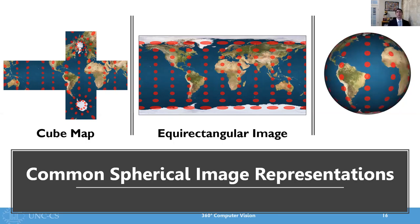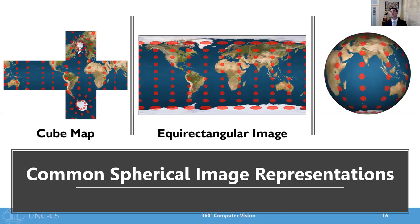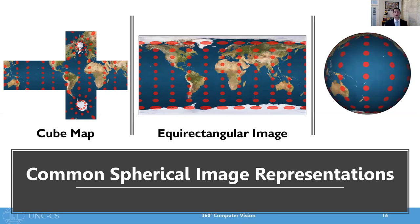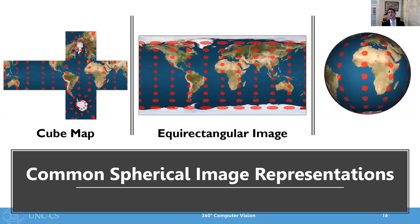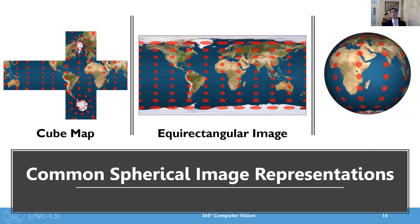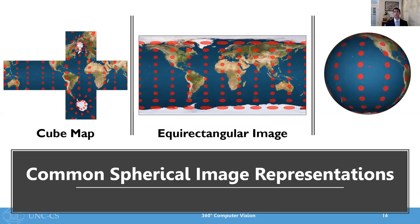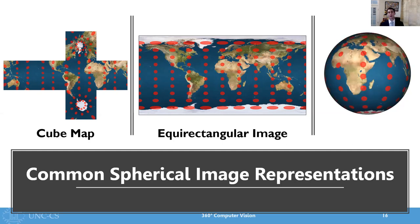In an ideal world, we want our planar projection to have perfect, equally sized circles, just as on the surface of the sphere. Unfortunately, this is not the case for these representations. In particular, I want to draw your attention to the strong horizontal distortion near the poles at the top and the bottom of the equirectangular image. This results in heavy pixel redundancy. And this is going to come up again later in the talk.